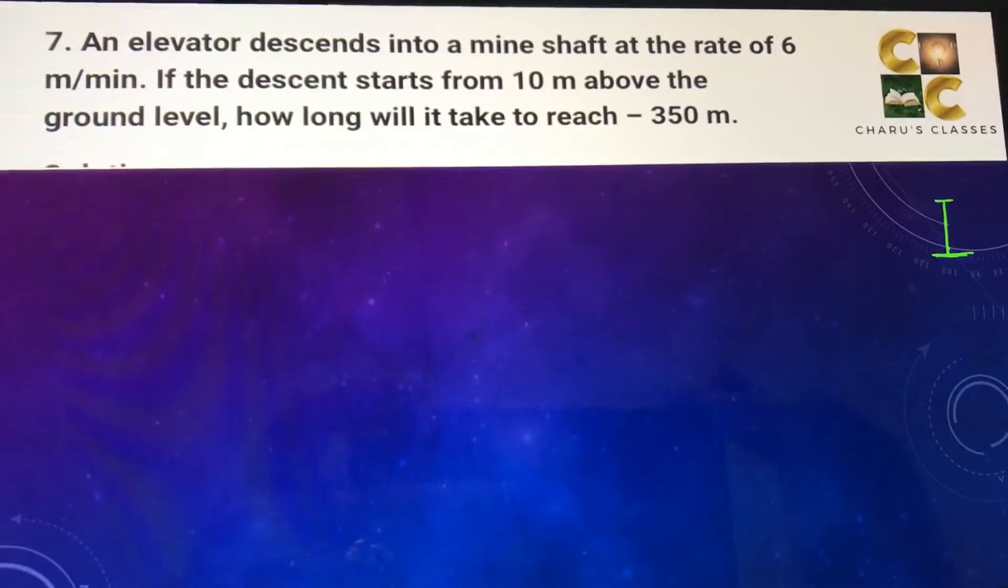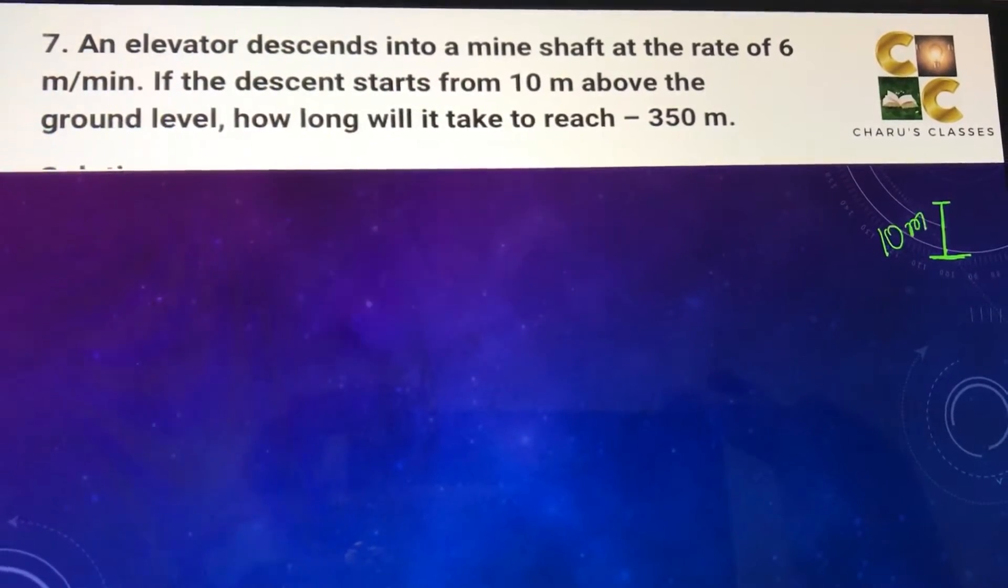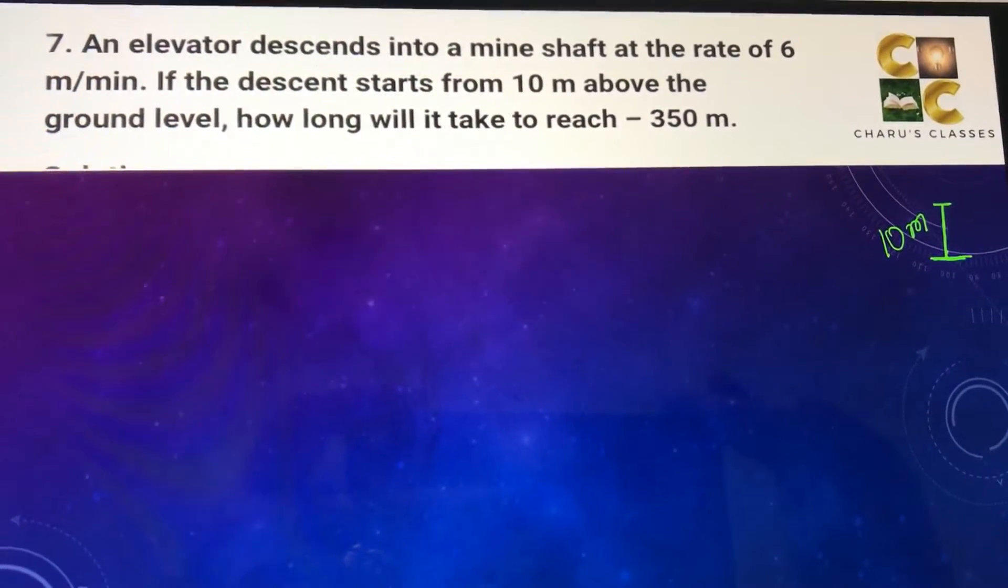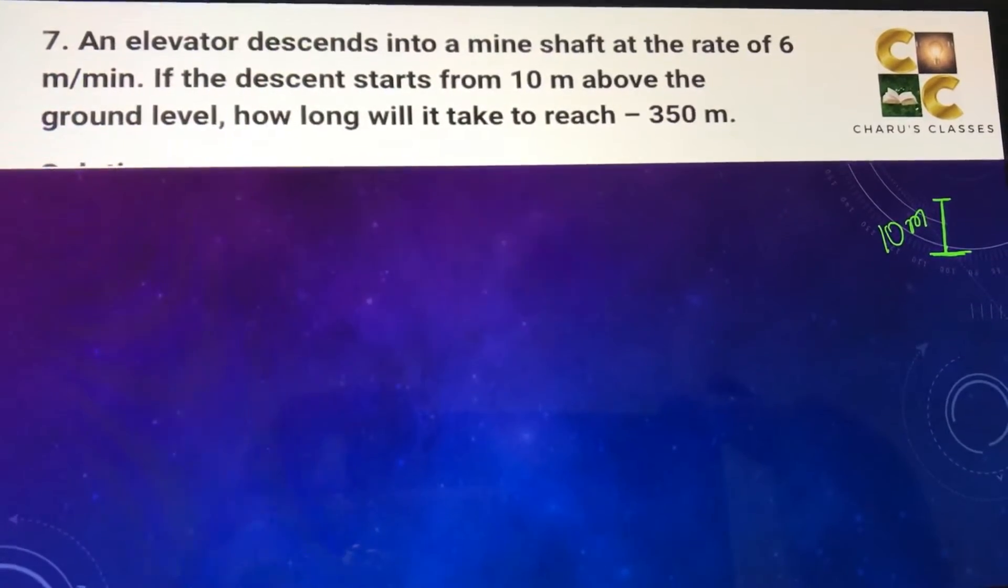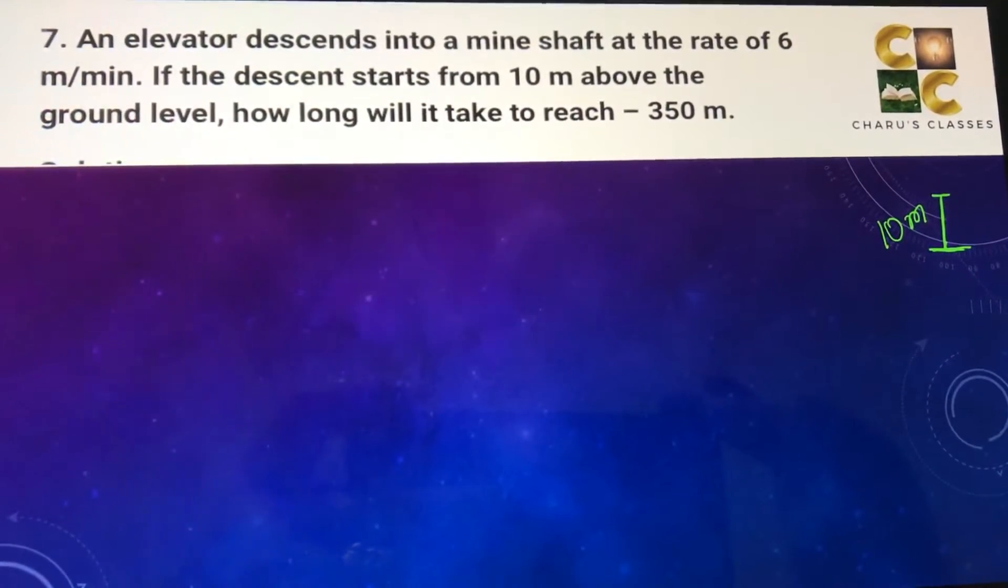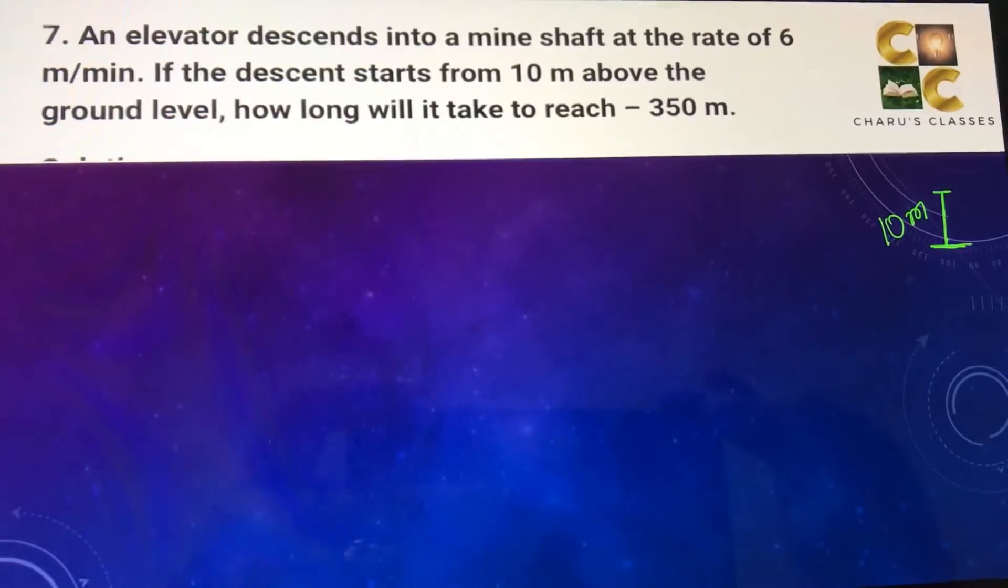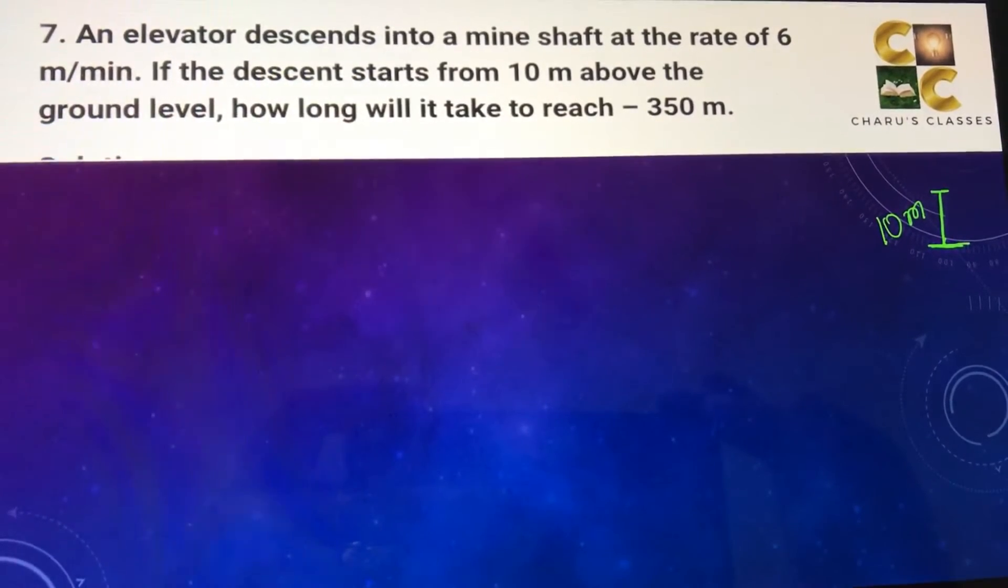So ground level, suppose this is the ground level. You have 10 meters above, there is an elevator. Elevator is a lift. It descends, descends means it is going downwards, into a mine at the rate of 6 meters per minute. That is, its speed is given.